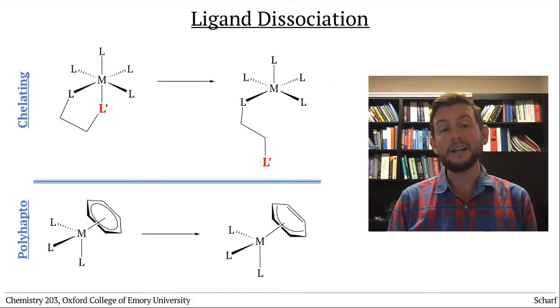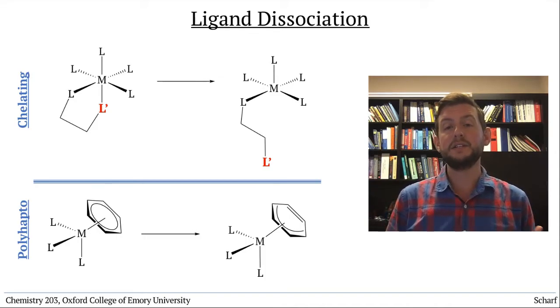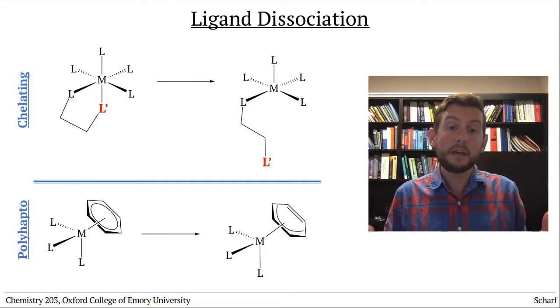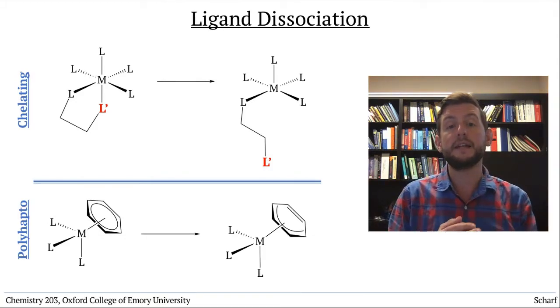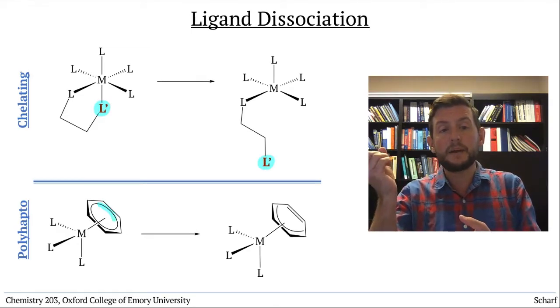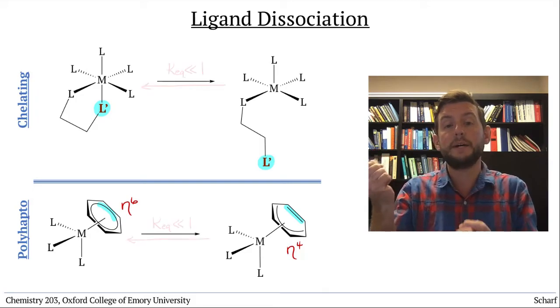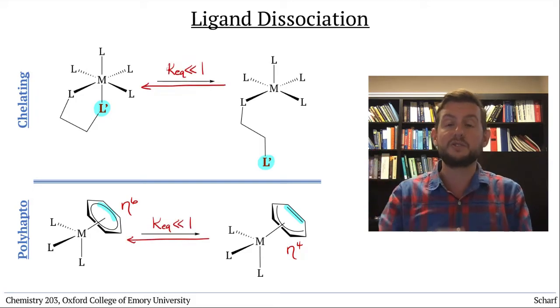Chelating and polyhapto ligands are particularly resistant to dissociation, precisely because they are donating multiple pairs of electrons to the metal center. And if any single electron pair donor dissociates, it's still held close to the metal, and it's likely to reassociate rapidly.